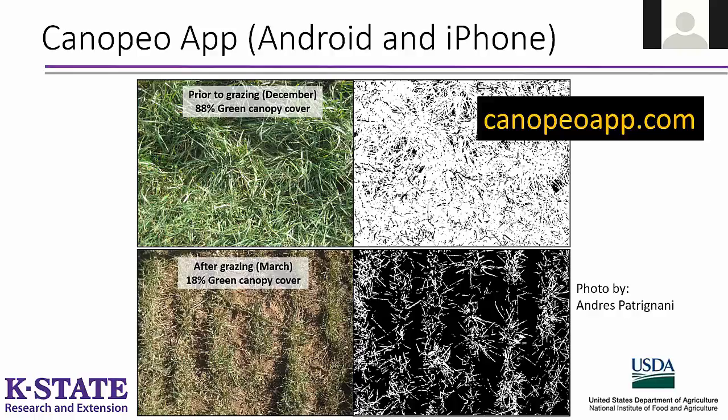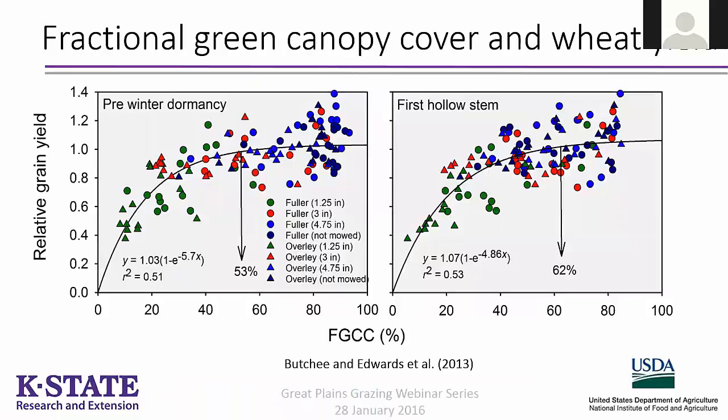So once you know the percent green canopy cover on your field, how do you use it? Going back to the graphs shown earlier in this presentation, which show the relationship between relative yield and fraction of green canopy cover, research has shown that maintaining fraction of green canopy cover above about 50 percent during fall, and above about 60 percent at grazing termination or first hollow stem, should help sustain wheat yields relative to an ungrazed control.